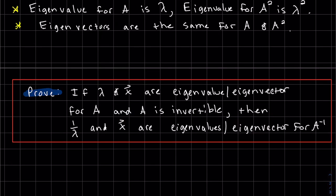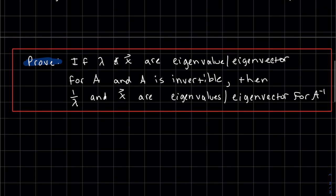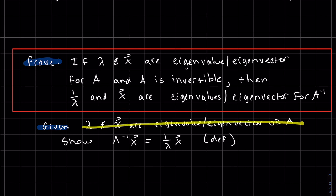Our next proof that we're going to do is if lambda and x are eigenvalue eigenvectors for A and A is invertible, then 1 over lambda and x are eigenvalues and eigenvectors for A inverse. It's a very similar proof. Basically, let's write out the given and what we need to prove first. So basically, this is given, and we want to prove these are the eigenvalues eigenvectors for A inverse, which is the same as showing the definition of that, which is A inverse x is equal to 1 over lambda x.